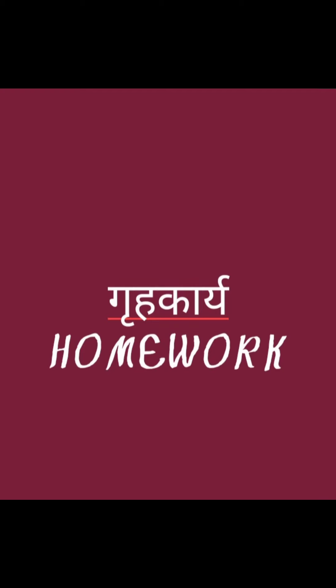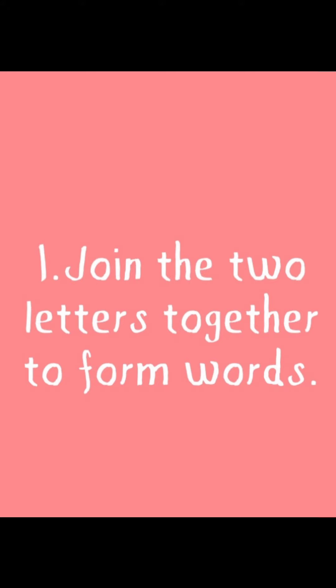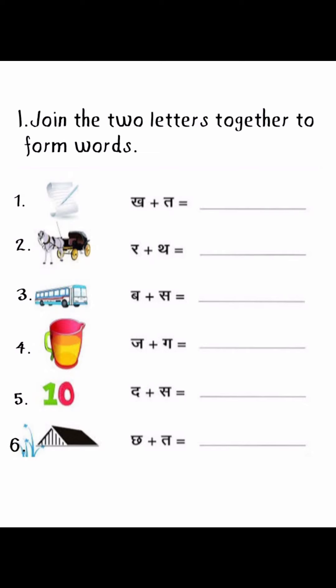Okay kids, next — Grihkarya, homework. Join the two letters together to form words. First: Ka plus Ta. Second: Ra plus Ta. Third: Ba plus Sa. Fourth: Ja plus Ga. Fifth: Da plus Sa. Sixth: Cha plus Ta.